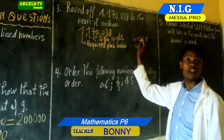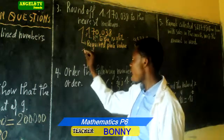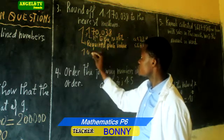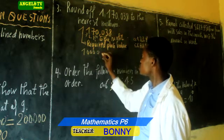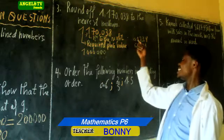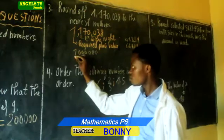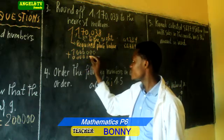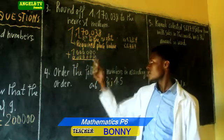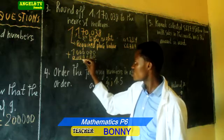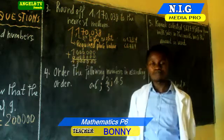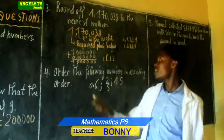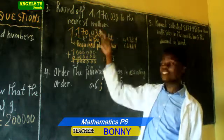We round it down by adding 0 on the required place value. All digits behind it become 0. So the number rounded off to the nearest millions gives us 1,000,000.